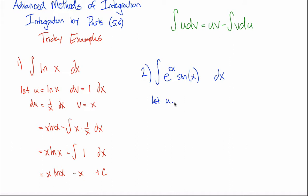You can either let the U be equal to the e to the 2x parts, and then your DV, the rest of the stuff. So in this case, sine of x dx. Or you could do it the other way around and make U sine of x and make your DV, e to the 2x dx. And either way, you'll get the exact same answer, which is kind of surprising.